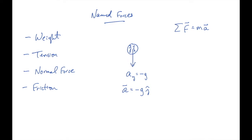We have acceleration a_y equals minus g, or the acceleration vector has magnitude g directed straight down along the negative y-axis. When I apply Newton's second law — adding up all forces and setting equal to mass times acceleration — in this case we only have one force. It's the force due to gravity giving us this acceleration. I'll call it F sub g, the force of gravity, or the weight force W.